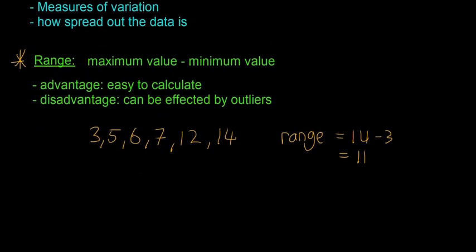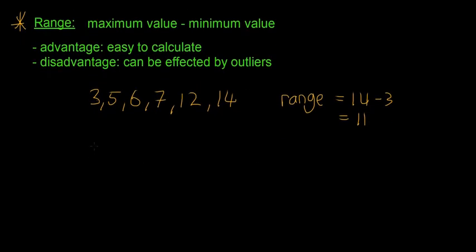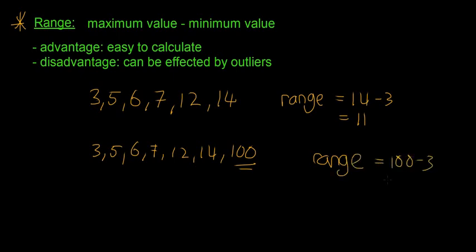So that's fine for these numbers here. But say, for example, we had these numbers: 3, 5, 6, 7, 12, 14, and then 100. So we have what's called an outlier. So in this case, our range is going to be 100 minus 3, which is equal to 97.